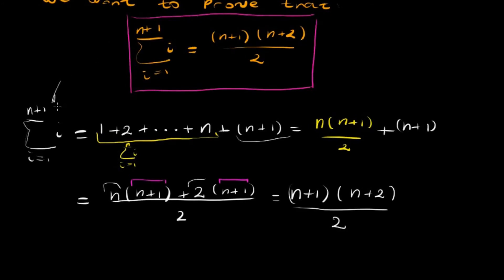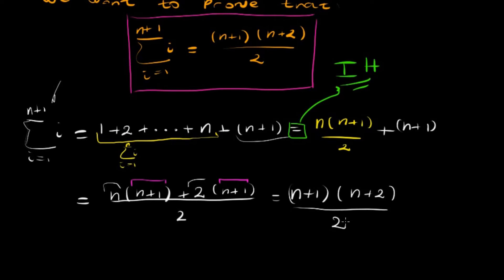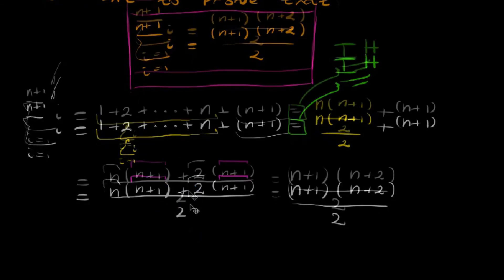So I started with a definition, used the inductive hypothesis — which is very important and must always be used — and through it arrived at what we wanted to prove. That's what the induction principle says: if you have the inductive hypothesis and through it you can get to what you wanted to prove, then your proof is correct. This was a simple example — just definition, hypothesis, and basic operations. Let's try a more tricky example.